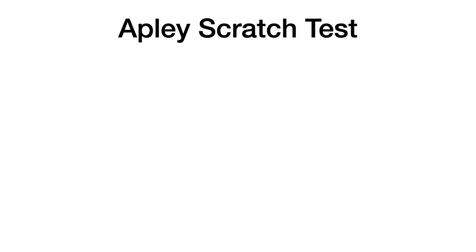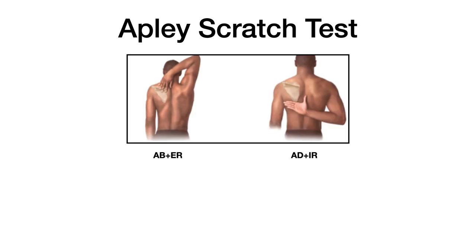Don't confuse the Apley scratch test with the Apley compression or distraction tests — this is different. The Apley scratch test is really just a way to test range of motion, particularly of the rotator cuff. One motion has the patient reach behind their head to touch the opposite scapula, testing abduction and external rotation. The other motion has them put their arm down and across their back to touch the inferior spine of the scapula, testing adduction and internal rotation. Mnemonic: 'If you scratch my back, I'll scratch yours.'